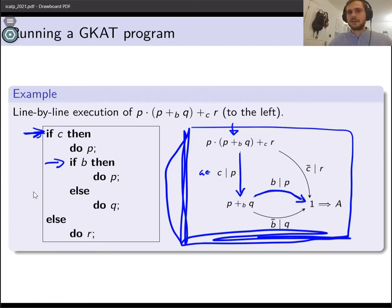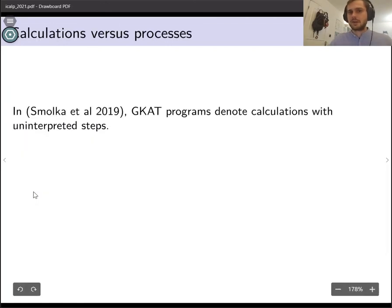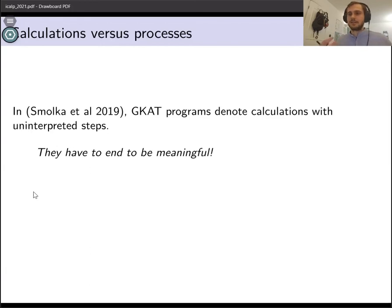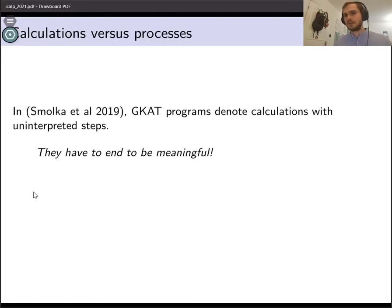This automaton is very much a calculation — it runs in finite time and doesn't always land in deadlock. In the 2019 paper, GCAT programs actually denote calculations with uninterpreted steps, meaning the programs needed to eventually terminate successfully in order to be meaningful. We're going to take a slightly different stance: in the slides to come, I'm going to treat GCAT programs as processes instead.